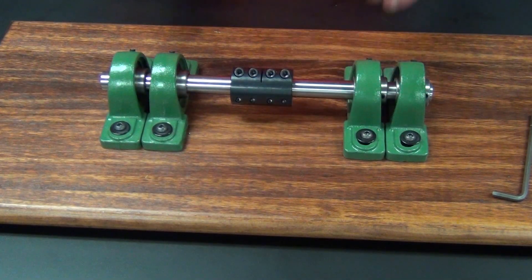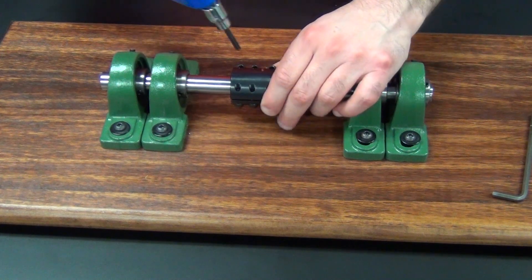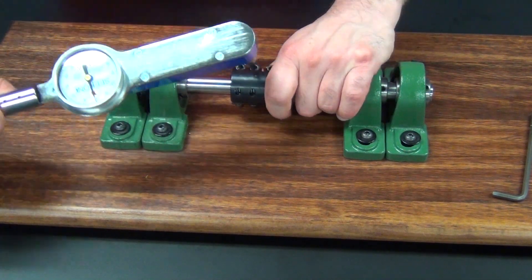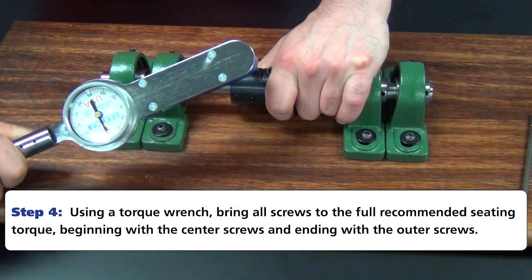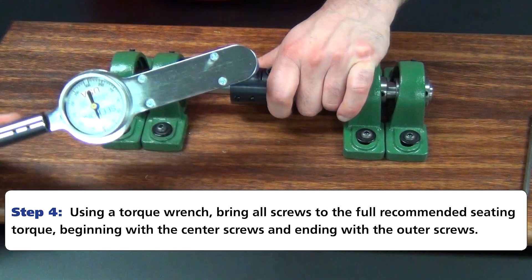Now that my screws are installed halfway, I'll complete the installation by going through the same pattern and installing to the full seating torque of 170 inch-pounds.